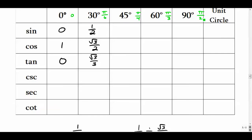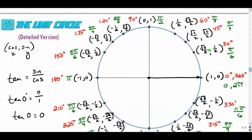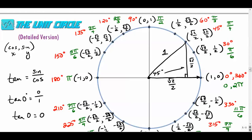For the sine of 45 degrees, or π/4, thinking in terms of right triangles: the coordinates at this point are radical 2 over 2 and radical 2 over 2, with a hypotenuse of 1. So the sine of 45° is radical 2 over 2 — opposite over hypotenuse — and the cosine of 45° is also radical 2 over 2, adjacent over hypotenuse.